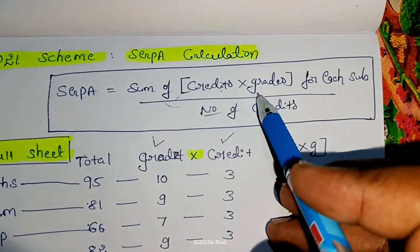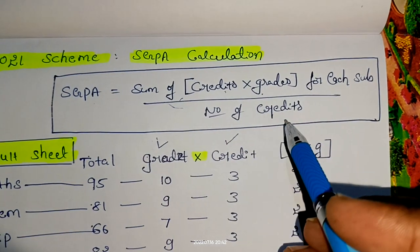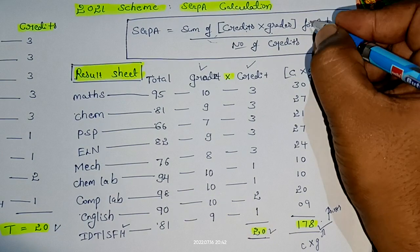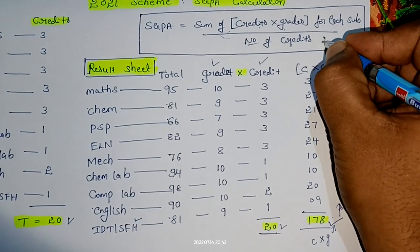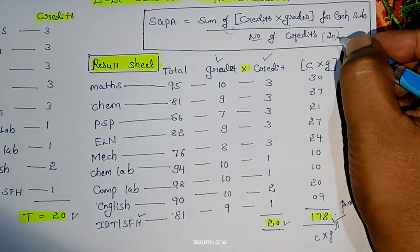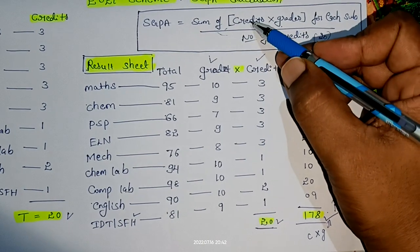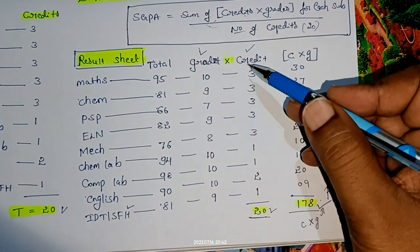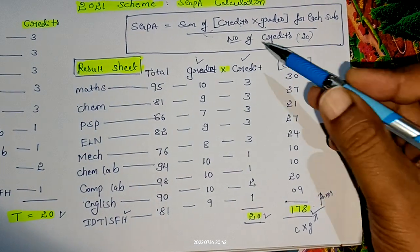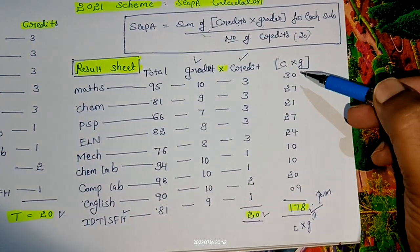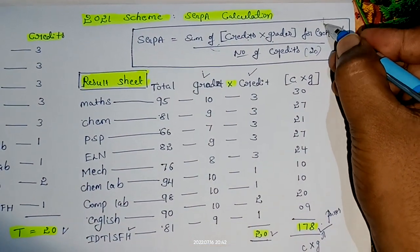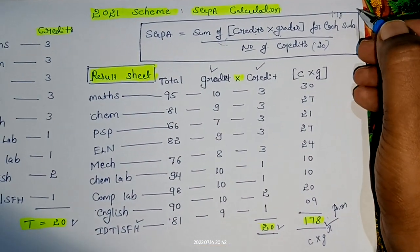Now I have the total points and also the number of credits. The SGPA formula says: sum of credits into grades for each subject divided by number of credits. We know the number of credits is 20, so the denominator is 20. The numerator is the sum of credits into grades. If I sum this, I get 178.